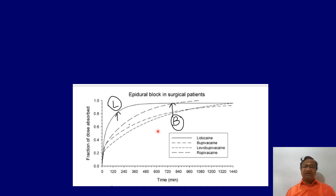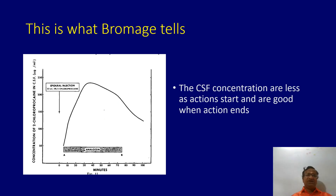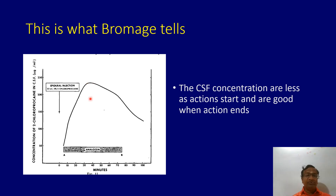Looking at epidural blockade with lignocaine and bupivacaine: the fraction of the dose absorbed systemically — the bioavailability of epidurally administered local anesthetics — is low, around 20%. This is what Pramaj tells. Looking at the old graph, when analgesia is very good at around 60 minutes, the CSF concentration may not be at its peak. The peak CSF concentration may be at 20–30 minutes, but the clinical action is best at 60 minutes when CSF concentration is lower.